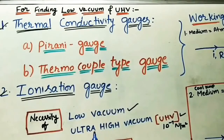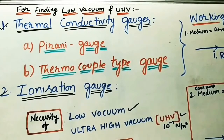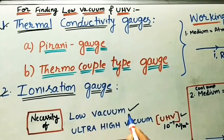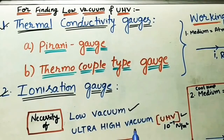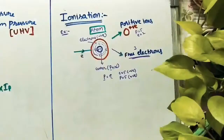The necessity of low vacuum is we are creating this vacuum pressure in the coating industries for metallic coatings and metallic or alloy surfaces. For ultra high vacuum pressure, it is 10 to the power minus 7 Newton per meter square.